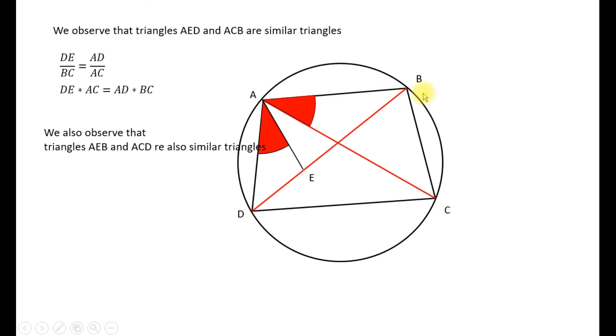Now the angle BAE is equal to the angle DAC because they are both equal to this red angle plus this one which is common between the two. So the two triangles have two of the angles equal so the third one will be equal.